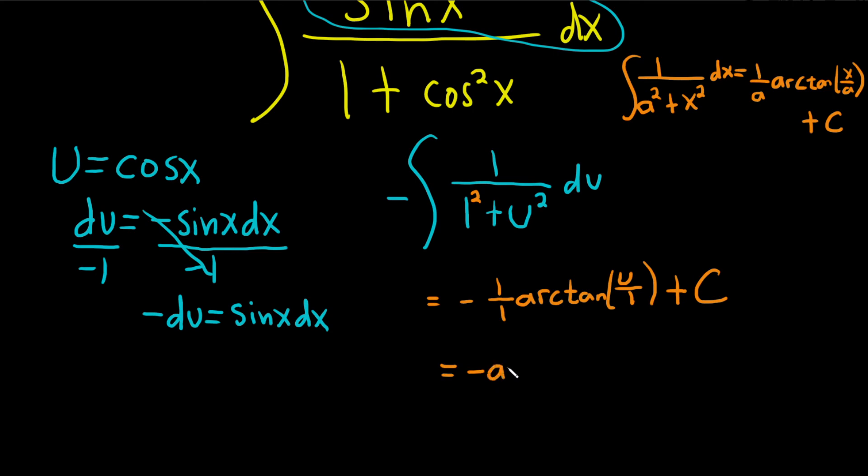So this is just negative arctangent of, and then u was cosine x. So this is just the arctangent of cosine x. And then we have plus our capital C, which is our constant of integration.